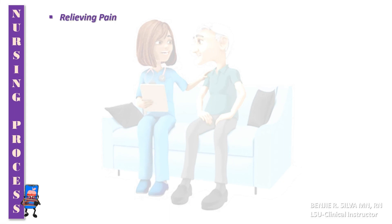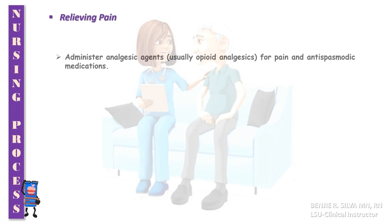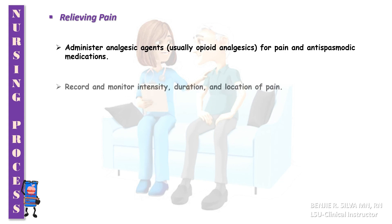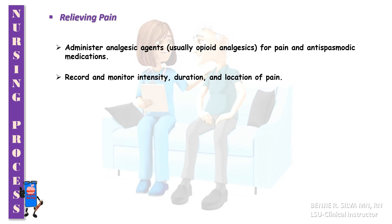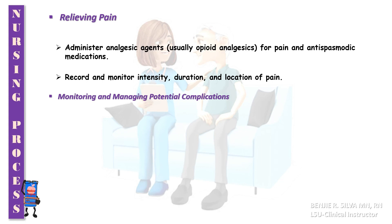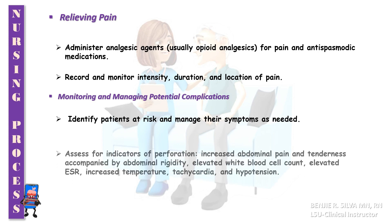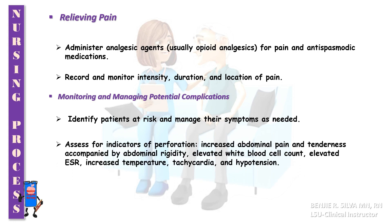For relieving pain, the nurse should administer analgesic agents — usually opioid analgesics — for pain and antispasmodic medications. Record and monitor intensity, duration, and location of pain. For monitoring and managing potential complications, the nurse should identify patients at risk and manage their symptoms as needed. Assess for indicators of perforation: increased abdominal pain and tenderness accompanied by abdominal rigidity, elevated white blood cell count, elevated ESR, increased temperature, tachycardia, and hypotension.